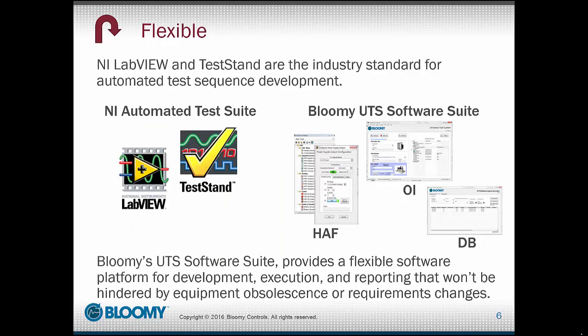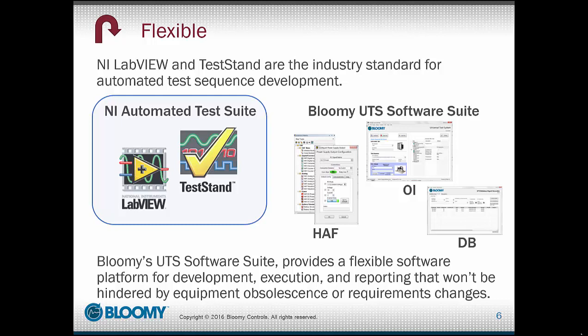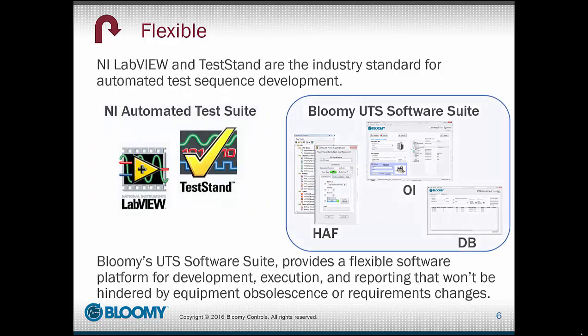Universal test systems are flexible, reducing the impact of requirement and equipment changes. Because a UTS is intended to test a wide variety of products, it must be flexible. By using NI LabVIEW and TestStand, the industry standard software for automated manufacturing tests, test sequences can be developed efficiently and robustly, and support for these National Instruments products is readily available on NI's website and forums. Built on top of LabVIEW and TestStand is Blume's UTS Software Suite, a set of tools designed to quickly and easily get you up and running with manufacturing functional tests. It provides an intuitive interface for developing, executing, and reporting on test sequences. The Hardware Access Framework portion of Blume's UTS Software Suite is an abstraction layer that decouples the test sequence development from specific hardware implementation and drivers. This means that test sequences can be developed independent of hardware, expediting development and reducing the risk that requirements, equipment changes, or instrument obsolescence will cause major rework of code modules within sequence files.